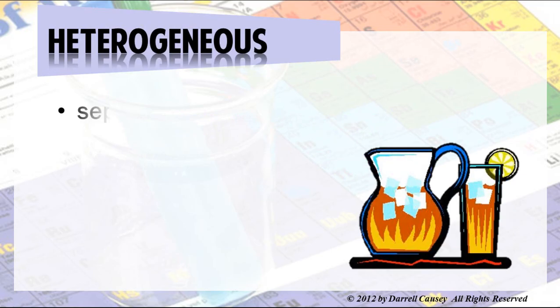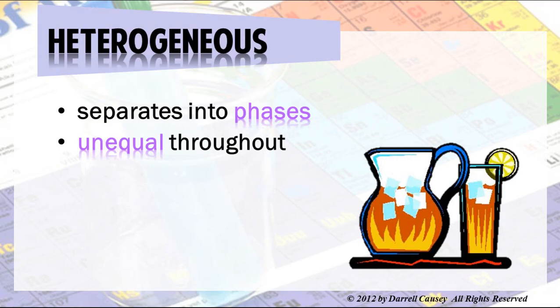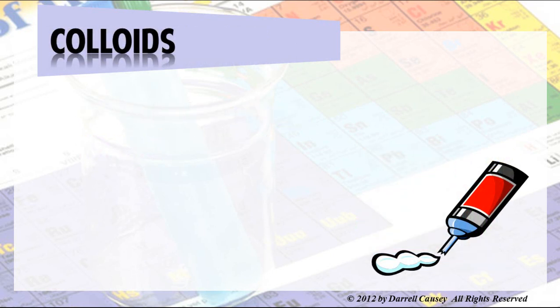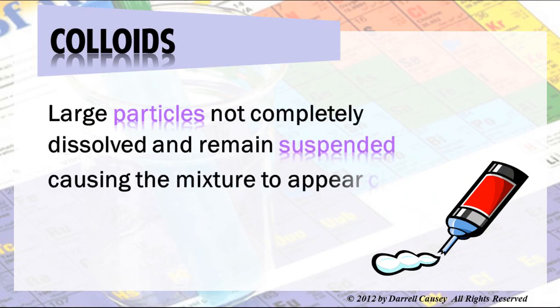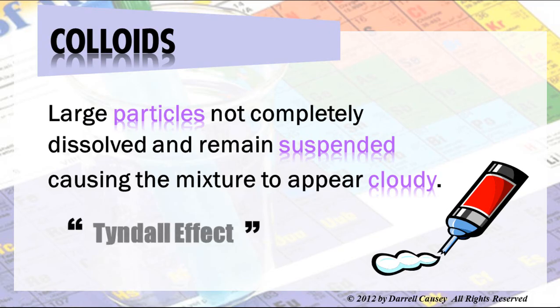Heterogeneous mixtures separate into phases and are unequal throughout. A very common type would be vinegar and oil, or water and oil — they separate. Anything that completely separates gives you a heterogeneous mixture. Then there are colloids: large particles not completely dissolved that remain suspended, causing the mixture to appear cloudy. This cloudiness scatters light, creating something called the Tyndall effect, which is a good way to test whether something is a heterogeneous suspension or a colloid.